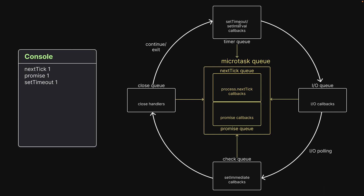We have one callback which is dequeued and executed, resulting in the third log statement. The event loop proceeds to the IO queue, but this queue does not have any callbacks. It then proceeds to the IO polling phase, and during this phase the read file operation is complete, which pushes a callback function into the IO queue. The event loop then proceeds to the check queue and the close queue, which are both empty. The loop then proceeds to the next iteration, checks next tick queue, promise queue, timer queue — all empty — and finally arrives at the IO queue. It encounters one new callback function which gets executed, and the fourth message is logged to the console. But the readFile callback also contains a call to nextTick, promise.resolve, and setImmediate, resulting in callbacks being queued up in the next tick queue, promise queue, and the check queue.